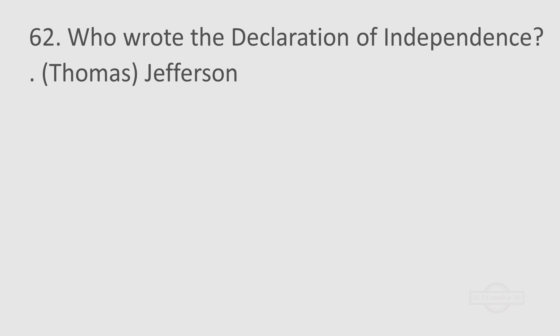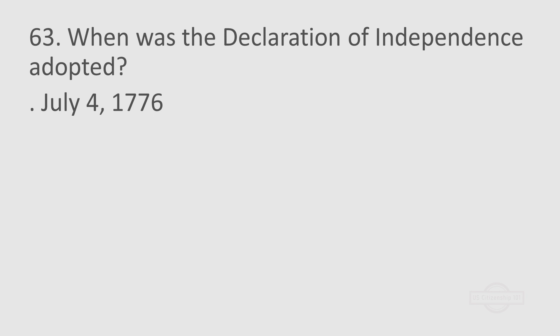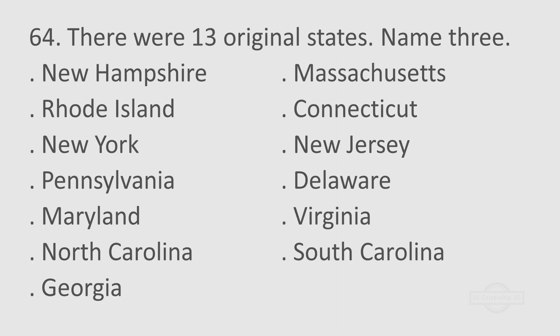Question 62: Who wrote the Declaration of Independence? Thomas Jefferson. Question 63: When was the Declaration of Independence adopted? July 4th, 1776. Question 64: There were 13 original states. Name 3. New Hampshire. Massachusetts. Rhode Island. Connecticut. New York. New Jersey. Pennsylvania. Delaware. Maryland. North Carolina. South Carolina. Georgia.